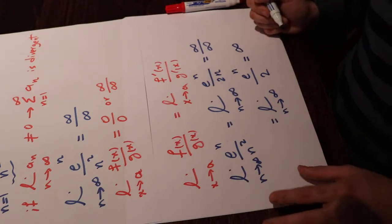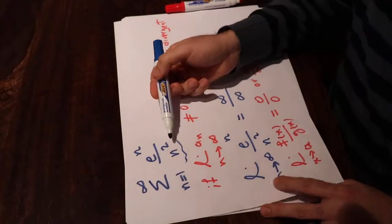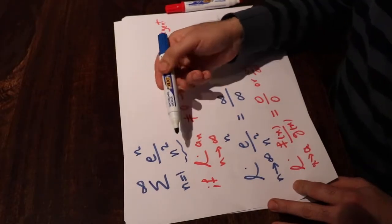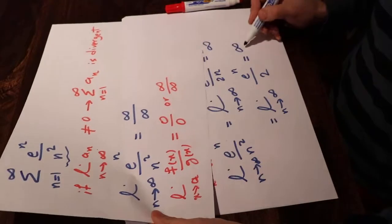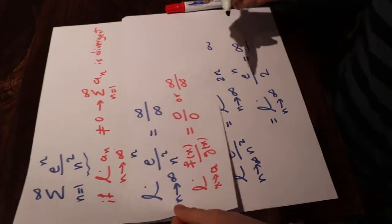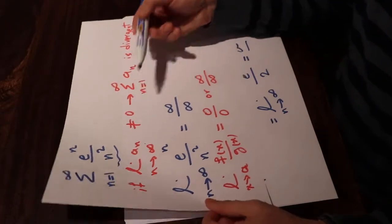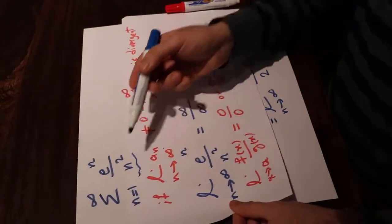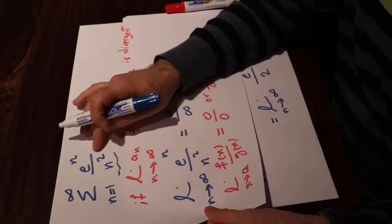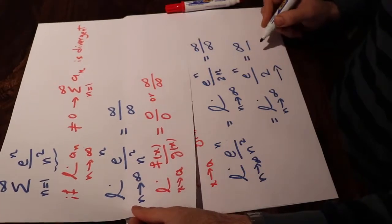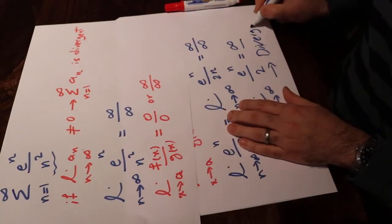This means the limit of that series — the limit of eⁿ/n², or the limit of aₙ — does not exist. We said if the limit of aₙ does not exist or is not equal to zero, that series is divergent. Since in this particular case the limit does not exist, we can conclude that the series is divergent.